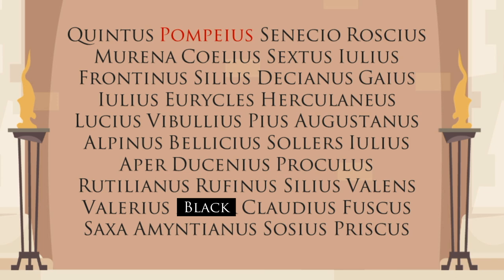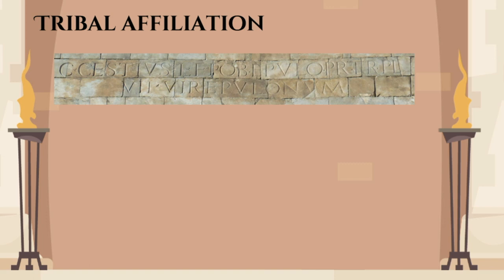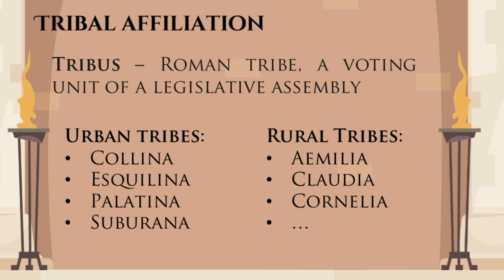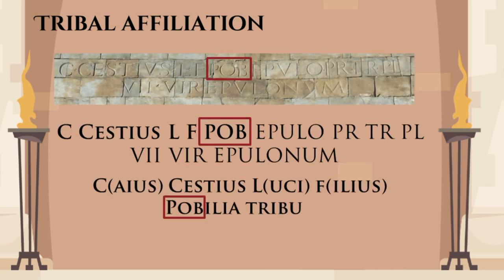The final point regarding aristocratic names is tribal affiliation. In some Roman inscriptions, besides the filiations already covered, you can sometimes see three letters that don't fit into any of the three types of names. These letters designate the Roman tribe, or tribus. Tribes were basically Roman voting districts, and each Roman citizen belonged to one of them. Tribal affiliation symbolized the citizen's right to vote, so in some contexts Romans deemed it appropriate to display it as a part of their name.